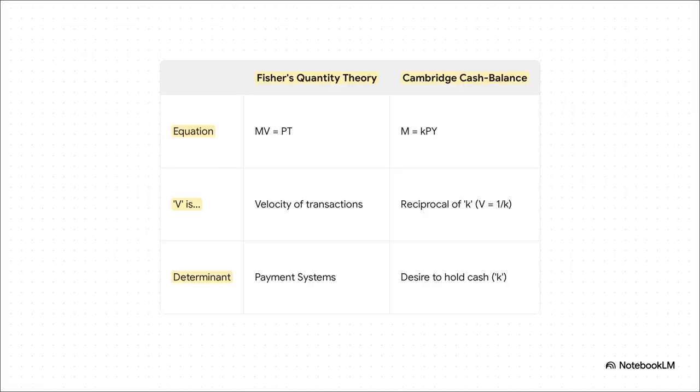The equations themselves tell the entire story. Fisher's famous MV equals PT puts velocity V right there in the spotlight. But then you look at the Cambridge equation, M equals KPY. They're obsessed with K. That's the proportion of income people choose to hold as cash. For them, velocity isn't something you measure directly. It's just the inverse of that choice.